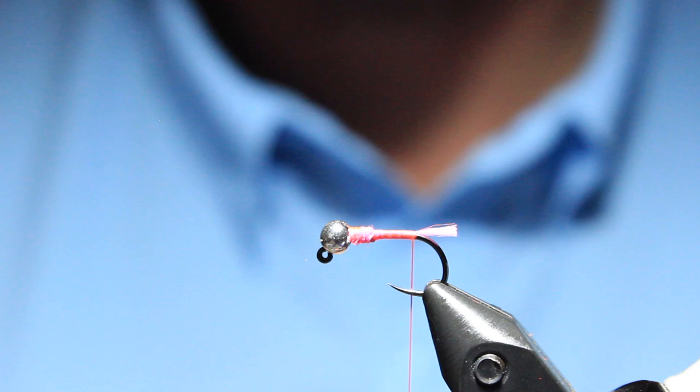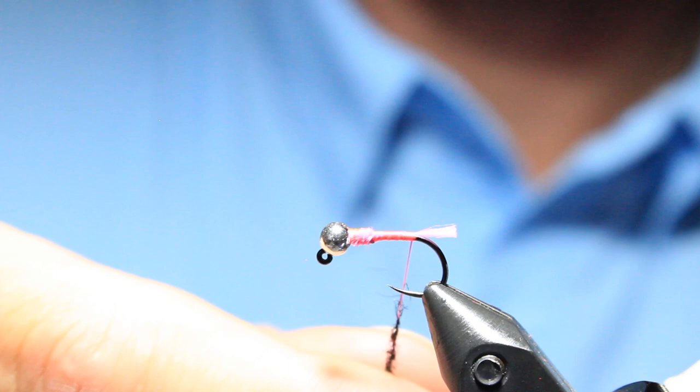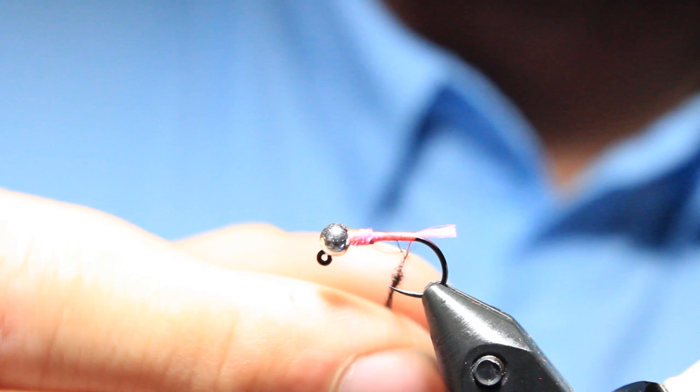So, next, Ice Dub Peacock Black. The secret ingredient. The glue that holds this all together. All we're going to do is just twist this up. In the original pattern, they use like a Mylar Rib and then they counter wrap it with mono. If I didn't lose so many of these, I would do that. But I just, I want these done fast. This is like the McDonald's. This is like a McDouble.